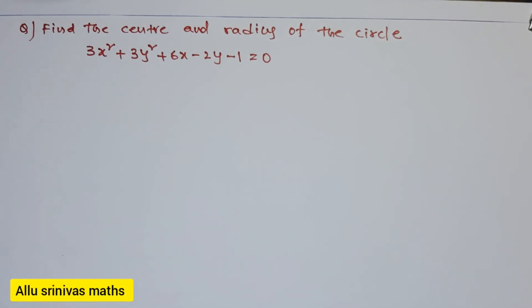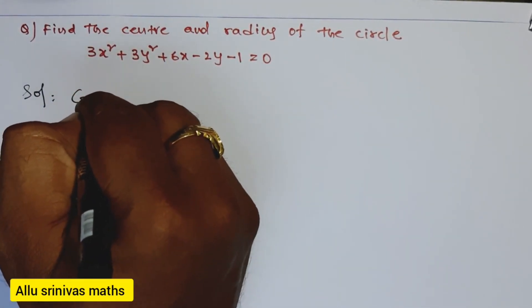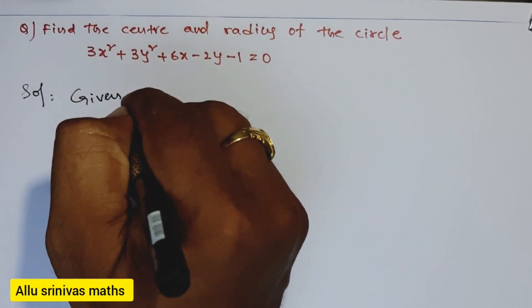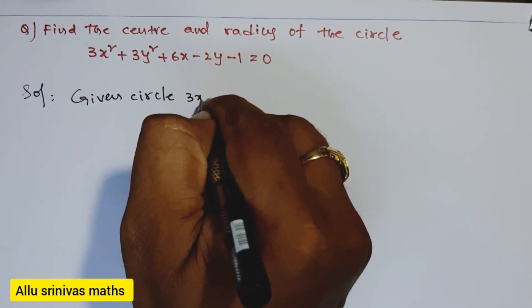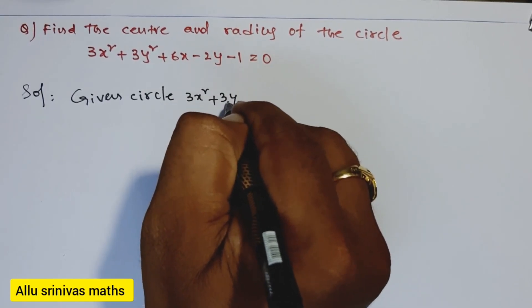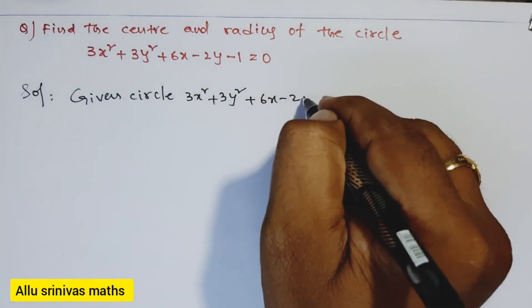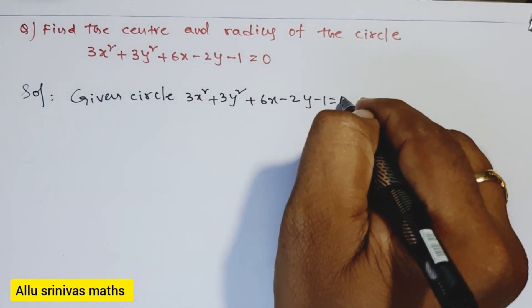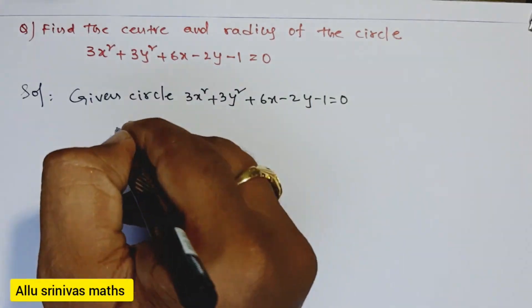We take another problem: find the center and radius of the circle. The question is to first write the given circle 3x² + 3y² + 6x - 2y - 1 = 0, then compare the given circle to the standard form of the circle.